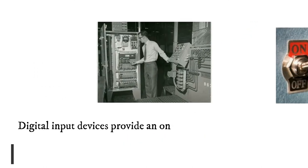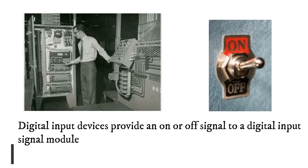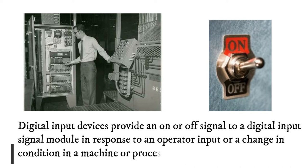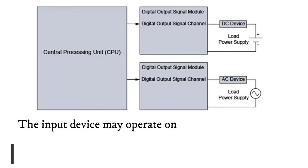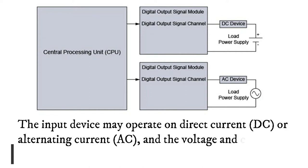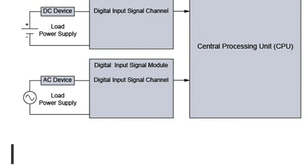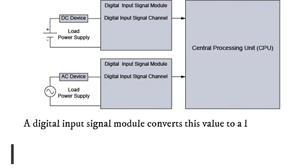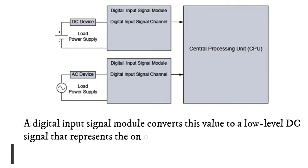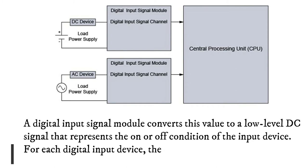Digital input devices provide an on or off signal to a digital input signal module in response to an operator input or a change in condition in a machine or process. The input device may operate on direct current or alternating current, and the voltage and current level is dependent on the type of device. A digital input signal module converts this value to a low-level DC signal that represents the on or off condition of the input device. For each digital input device, the latest on or off condition is stored in the CPU.